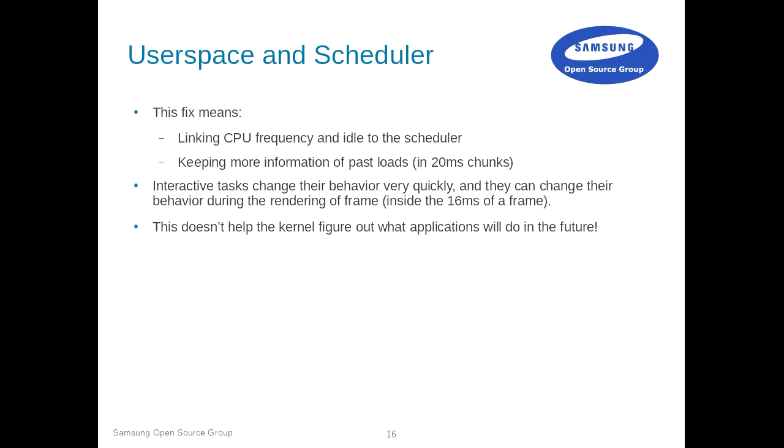As user space, we're not helping the kernel because we draw frames in 16 milliseconds — starting with an IO-bound task, then switching to memory-bound, then CPU-bound, then memory-bound again, all within 16 milliseconds. The kernel has basically no stable profile to work with, and we change it for almost every frame. So even if the kernel improves things, on the user space side we are absolutely not helping them. And if on the user space side we don't improve our work, it's not going to help.